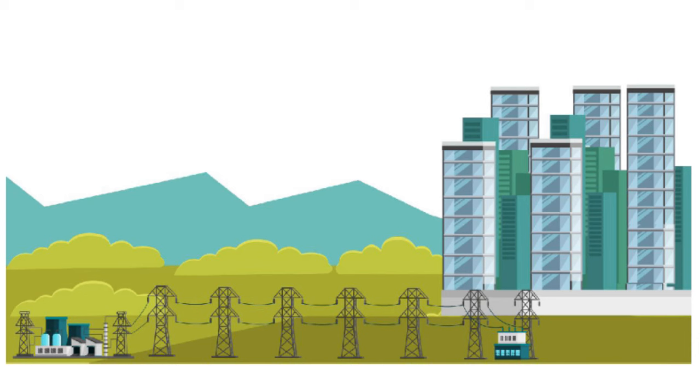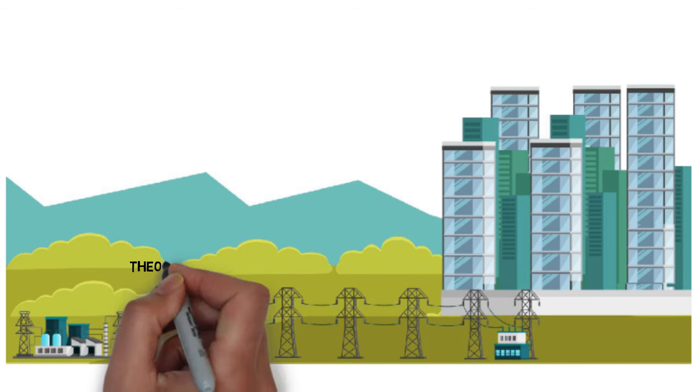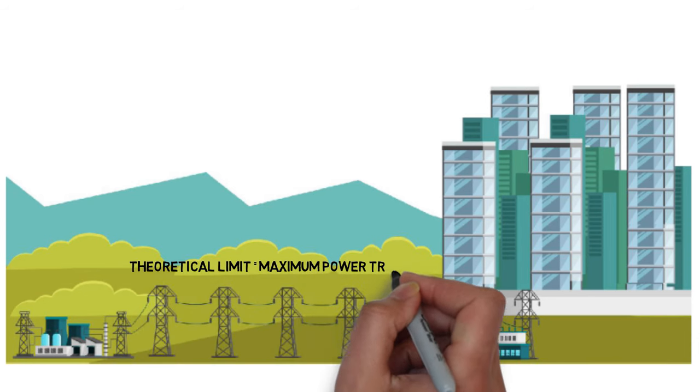If we consider the power delivered to a load center by a lossless line, the maximum power the line can deliver is known as the theoretical limit.